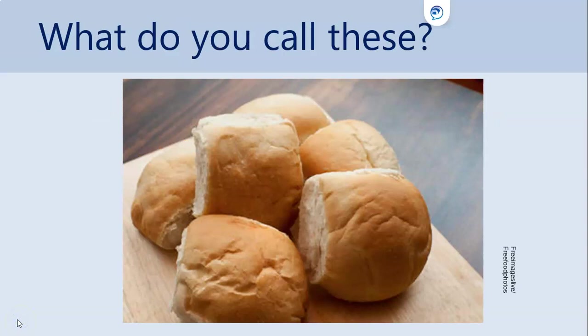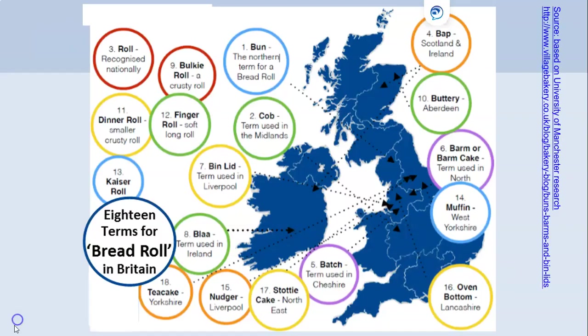For example, if we look at this one food item — what do you call these? I call them buns or possibly rolls, but I'm from the North East. You might call them something different, depending on where you come from in the UK. It might surprise you to learn that there are at least 18 different ways of describing this food, and here are just a few.